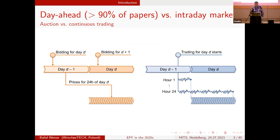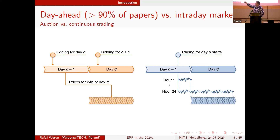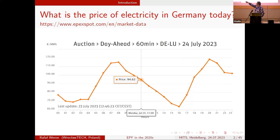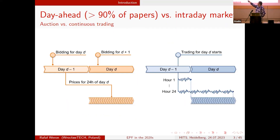If you look at the literature on electricity price forecasting, it is mostly about the day-ahead market — the orange part. We bid in the morning, the settlement of all prices for all load periods of the next day happens around noon. The most common structure is 24 prices for the next day. However, this is not the only market — there are also short-term markets, some operating more like financial markets.